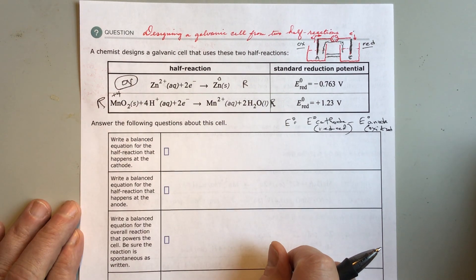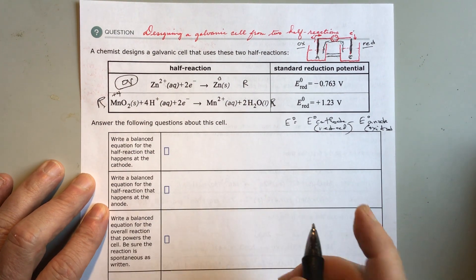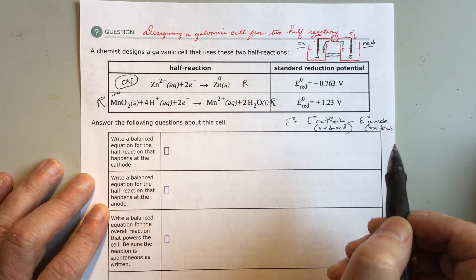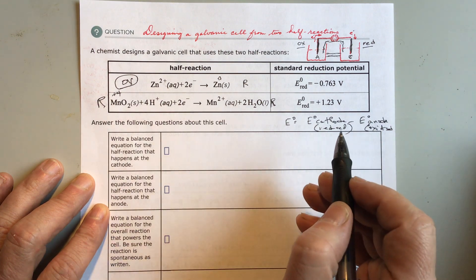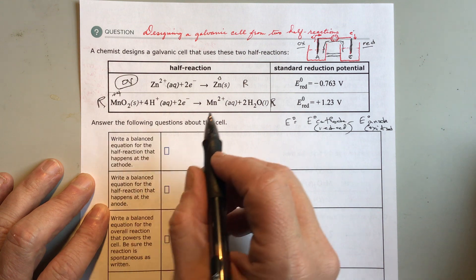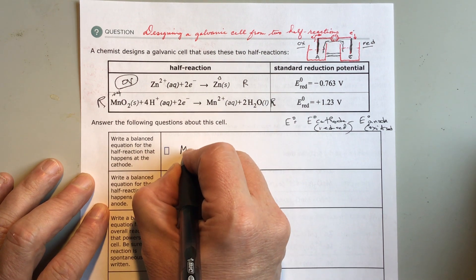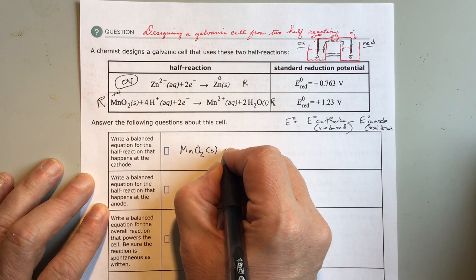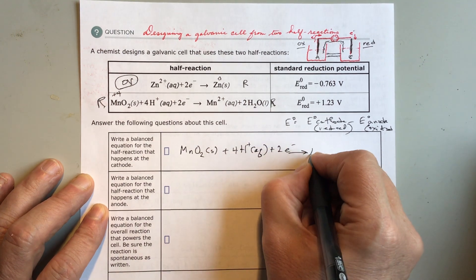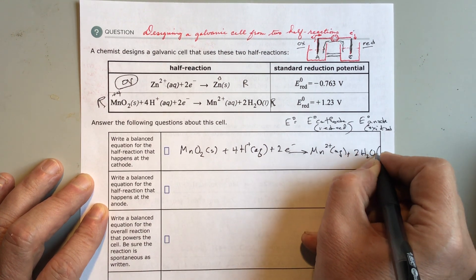The reduced one is already given. The oxidation, you're going to have to flip it - the left becomes the right, the right becomes the left. The cathode is the one that's reduced and the anode is the one that's oxidized. So this one stays put and this one flips. Here's the one at the cathode, the one being reduced, so I'm just going to copy. MnO2 solid plus 4H+ aqueous plus 2 electrons yields Mn2+ aqueous plus 2H2O liquid.